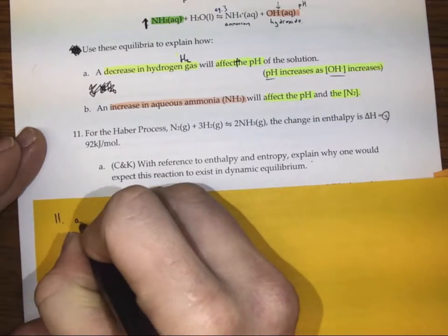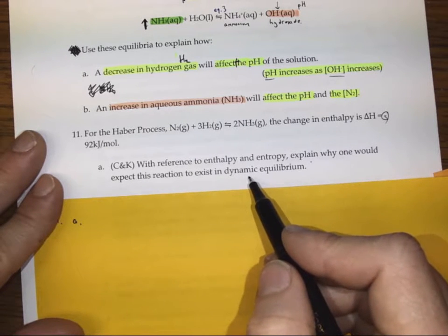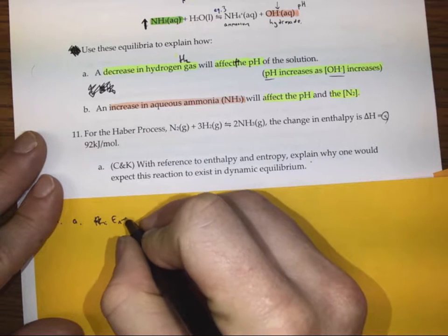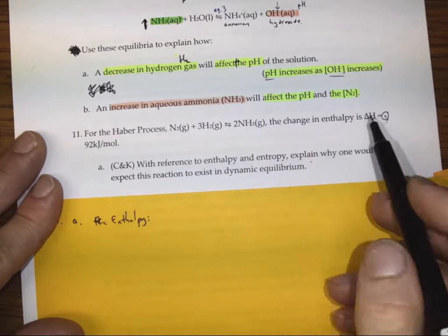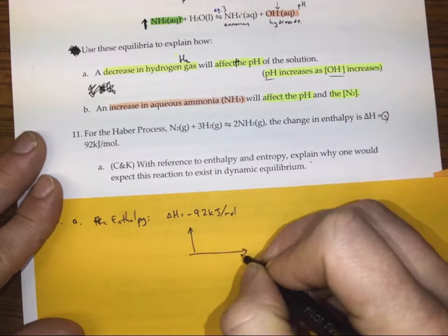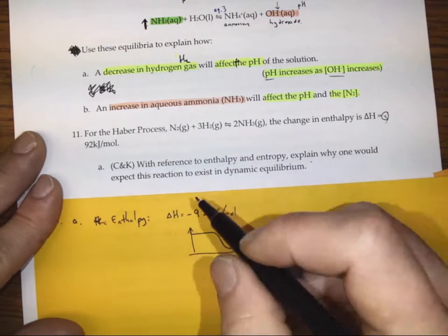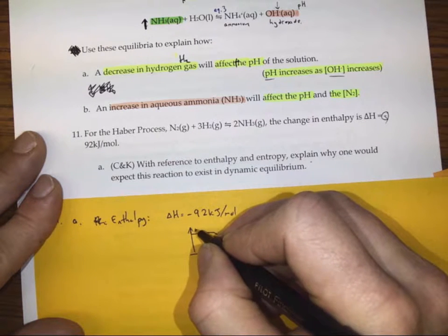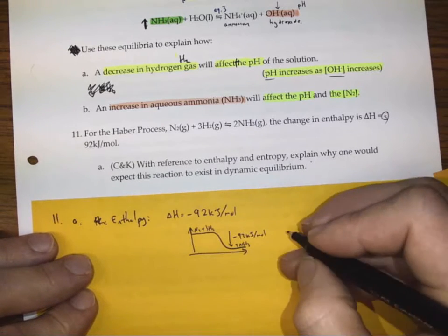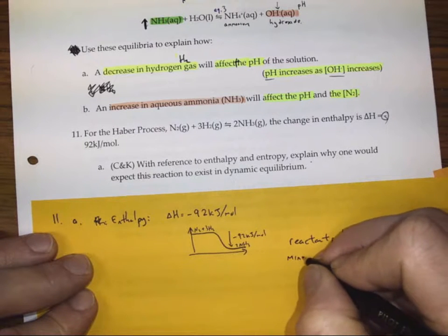We're asked a series of questions. 11A: with reference to enthalpy and entropy, explain why we think this reaction should exist in equilibrium. So our enthalpy — if we know this reaction has a ΔH of negative 92 kilojoules per mole — tells us that if we picture this reaction, we can see it's losing 92 kilojoules per mole of bond energy. Going from N₂ and 3H₂ down to 2NH₃, this means we're going to lose bond energy. So we say the reactants have a minimum enthalpy.